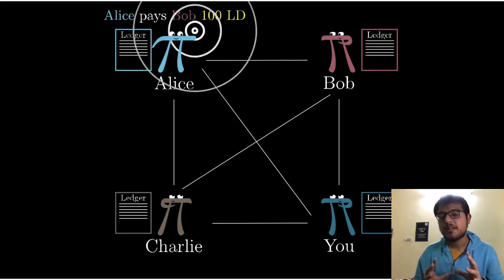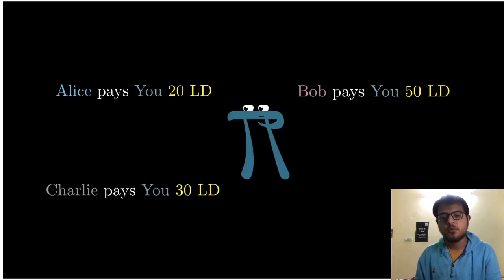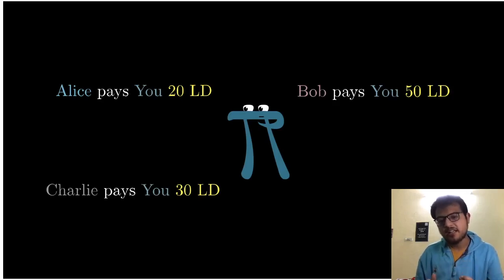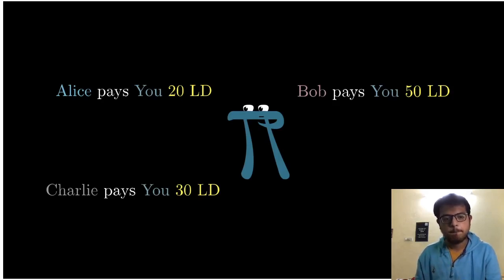Now we focus on you — a representation of you seeing different kinds of transactions coming in. Alice pays you $20, Charlie pays you 30 ledger dollars, Bob pays you 50 ledger dollars. All these things are coming together and you keep writing them down. But there's a key thing at play.